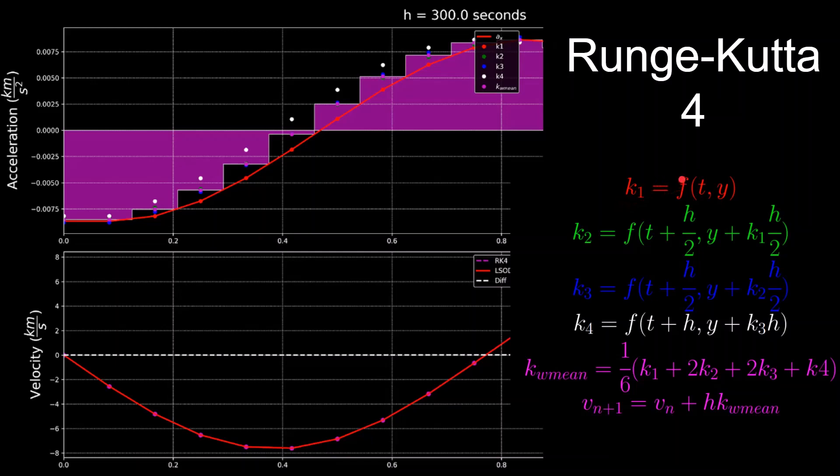So on the right is how the derivative function is being evaluated. The first value K1 is exactly the same as before, just evaluate the derivative at the current time step and the state. And that is the red points on this acceleration plot.